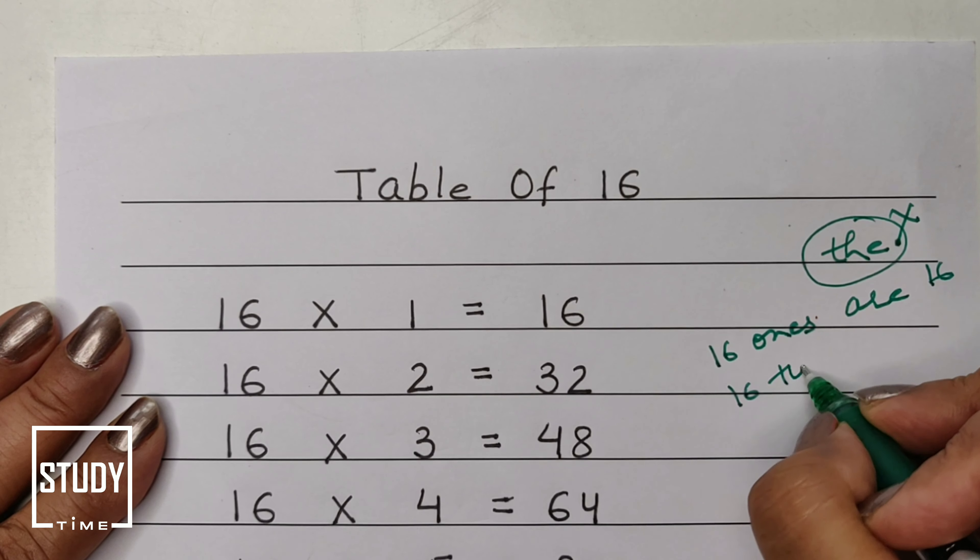16 twos are 32. You mean 16 twos? So it doesn't mean 'the'. They are not the same when they are reading the table in English. Many of you were wrong.